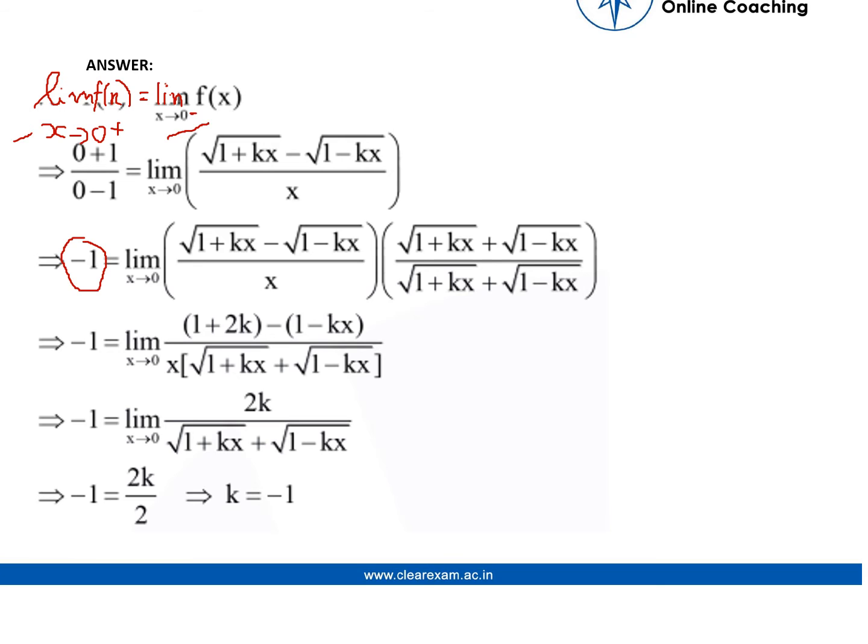On this side we are finding the LHL, that is x tending to 0 minus. This is the notation for LHL. Then we are rationalizing it. Remember that if the sign is minus in between, then it becomes plus, and vice versa.